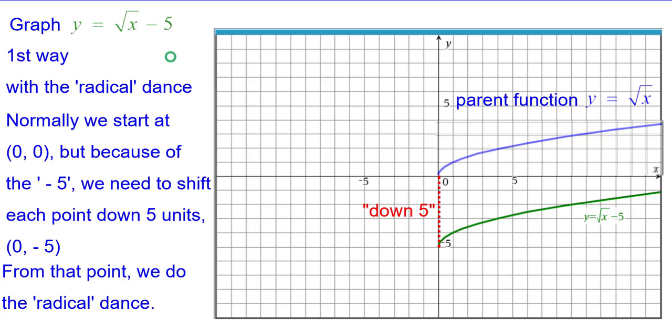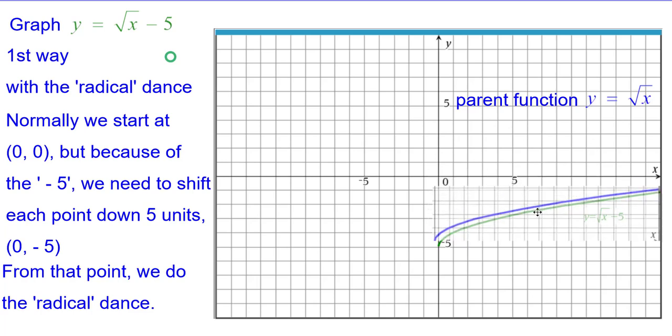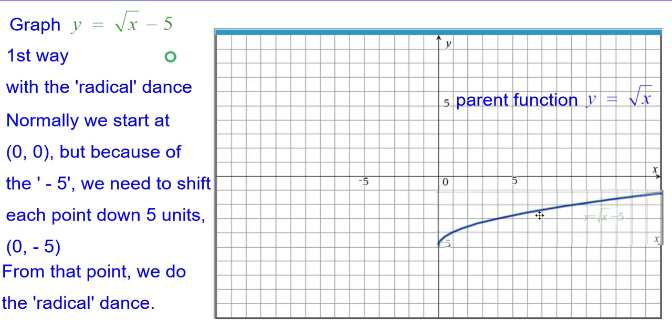Notice from the blue to the green it's down 5 at several different points. The whole curve is dropped down 5 units. In fact, I can even grab the parent function and shift it down 5 units and they match pretty much perfectly.